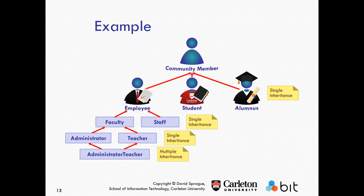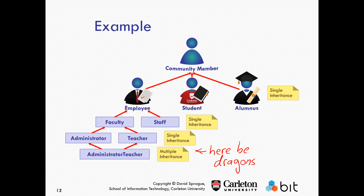For example, Carleton community members can be broken down into employees, students, and alumni. Among employees, we have faculty and staff — they're different. That's single inheritance. Multiple inheritance is where it gets complicated — some languages like Java will not allow multiple inheritance at all. You cannot be a child class of two different classes in Java. C++ actually will allow multiple inheritance, but it's something people are wary of. So if you're an administrator and a faculty member, you cannot be an 'administrative teacher' in Java.